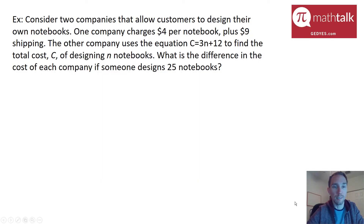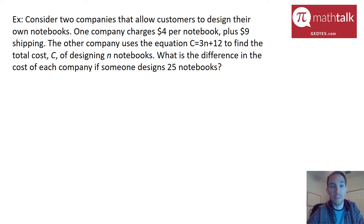We have an example that says: consider two companies that allow customers to design their own notebooks. One company charges $4 per notebook plus $9 shipping. The other company uses the equation C equals 3N plus 12 to find the total cost C of designing N notebooks. The question asks: what is the difference in the cost of each company if someone designs 25 notebooks?